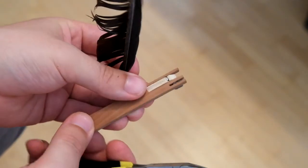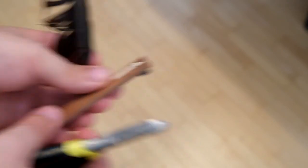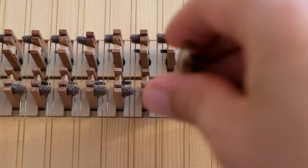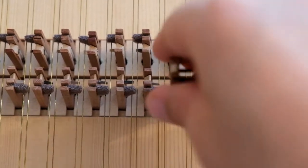Our plectrum is taking shape. The first thing we'll need to do is cut it to the right length. Insert the jack back into the harpsichord and observe how far the plectrum protrudes behind the string.